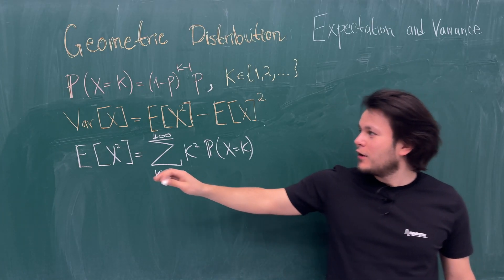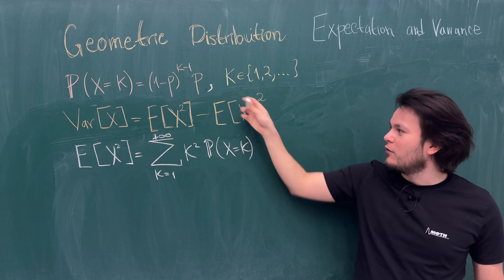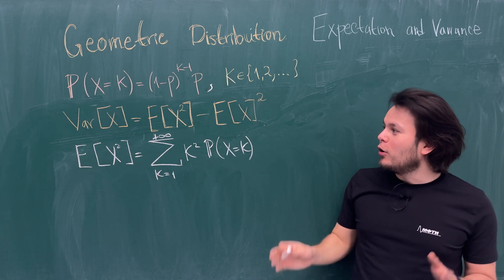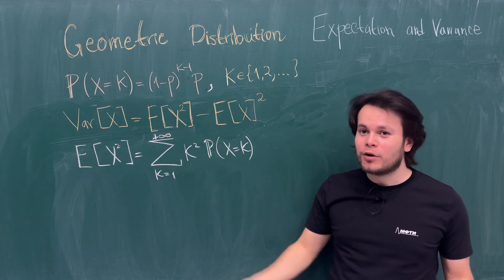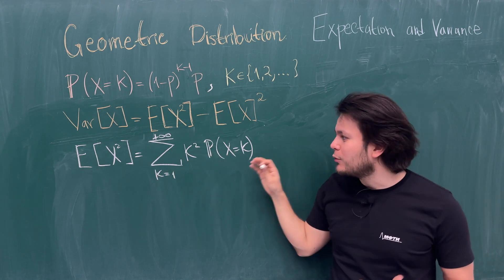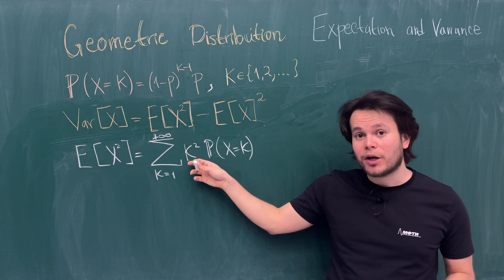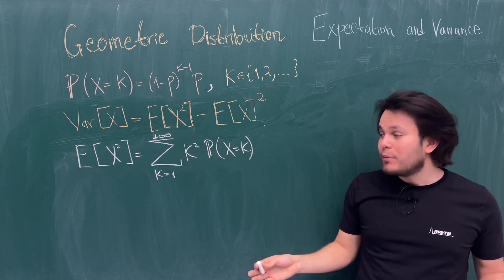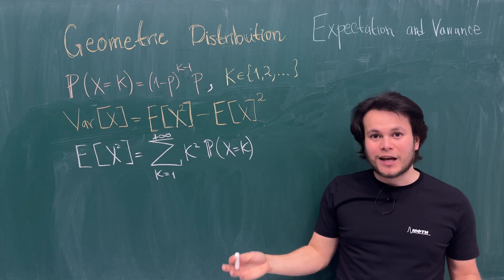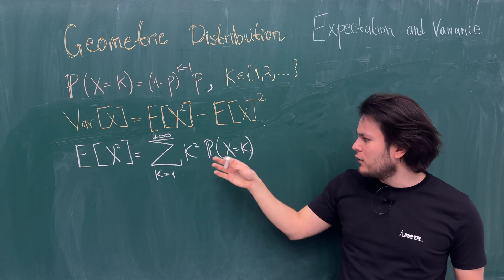Now let's compute the variance. The formula is Var(X) = E[X²] - (E[X])². We already know E[X] = 1/p. We need the second moment E[X²], computed as the sum from k=1 to infinity of k² · (1-p)^(k-1) · p. This is similar to the expected value formula but with k² instead of k.